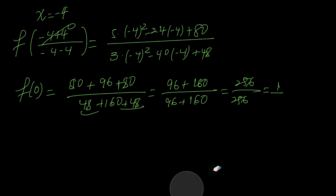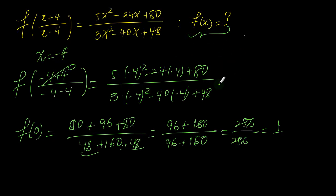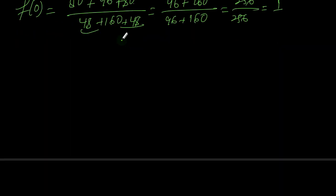So it means that when we find our f of x and plug in x = 0, we have to get 1. Now let's start solving our functional equation. We're going to make a substitution — let's say x + 4 over x − 4 is equal to a.